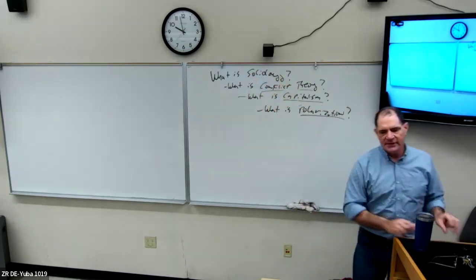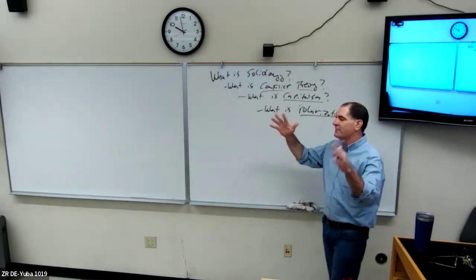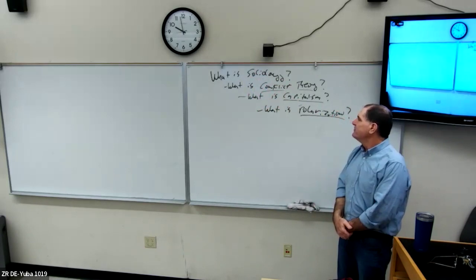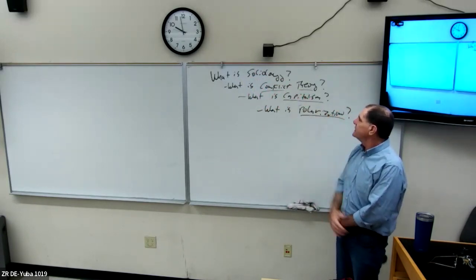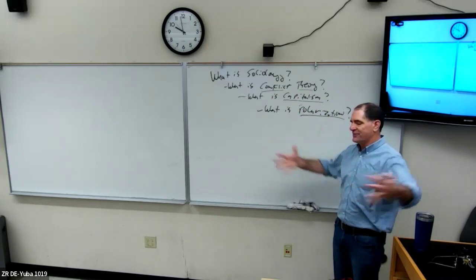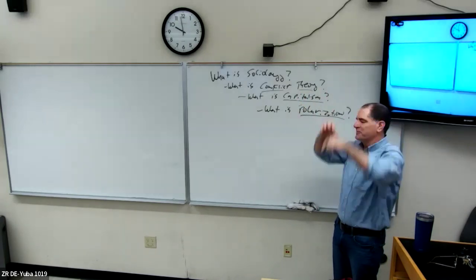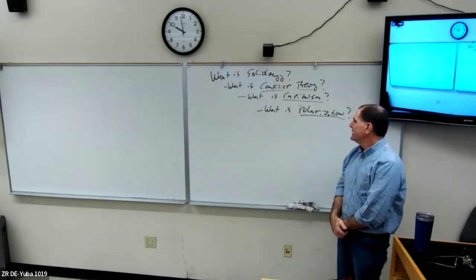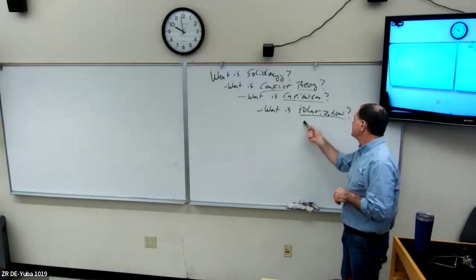Where we ended up last time was on the question of polarization. From our first chart about 'what is sociology,' the big concern Karl Marx had — the founder of conflict theory — was that capitalism can't last very long because it leads to a situation where most people end up with not enough to live on: not enough food, housing, or healthcare, while a small group ends up with way too much. That term is polarization.